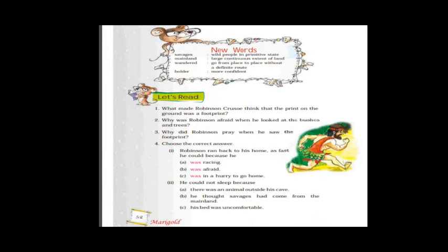Let's start with the new words from the Robinson Crusoe lesson. Savages: wild people in a primitive state. Mainland: a large continuous extent of land. Wandered: going from one place to another. Bolder: more confident. Inhabited: occupied.